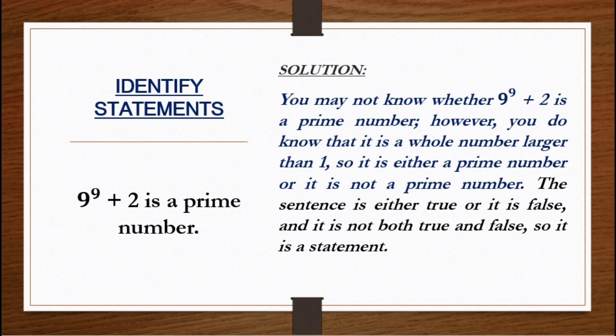Problem three: '9 raised to 9 plus 2 is a prime number.' We may not know whether 9 raised to 9 plus 2 is a prime number. However, we do know that it is a whole number larger than 1. So it is either a prime number or it is not a prime number. The sentence is either true or false — it is not both true and false. So the statement has a logic. Whatever the answer comes out to be, it will be either prime or not prime, and a statement must be true or false but not both.